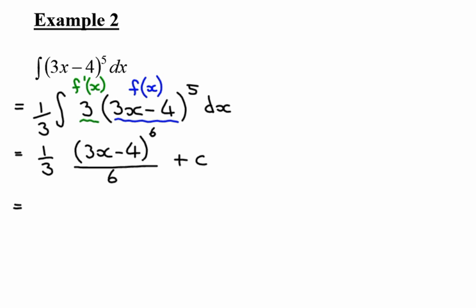So I'm going to have 1 over 18, 3x minus 4 to the power of 6 plus c. You could have also written 3x minus 4 to the power of 6 all over 18 plus c.